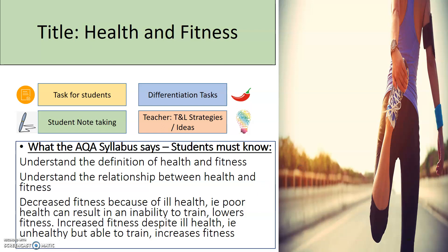Hello and welcome to another lesson, another screencast, this time on health and fitness. So just a reminder: yellow text boxes refer to the task for students, green text boxes are for students to take notes on, blue tasks are differentiated tasks primarily for students with sentence starters and things like that, and red text boxes are for the teacher in regards to teaching and learning strategies.